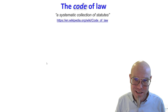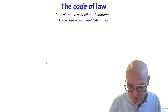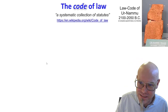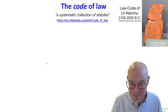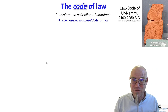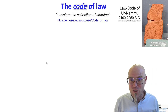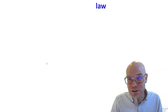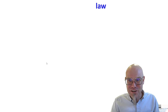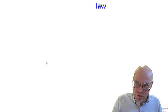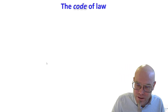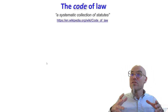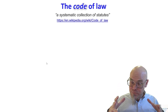The code of law is a systematic collection of statutes. And that goes back to 2000 BC — 4,000 years ago — where we already coded. What we coded was not digital code; what we coded was the code of law. And that is the code we are really supposed to live by.